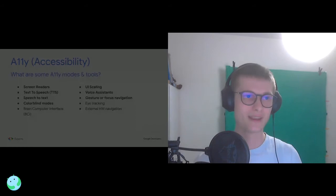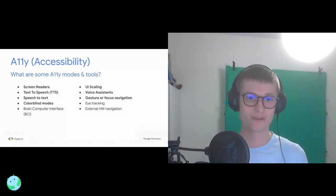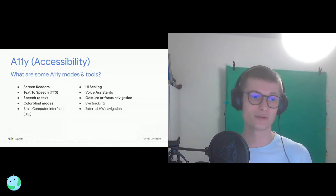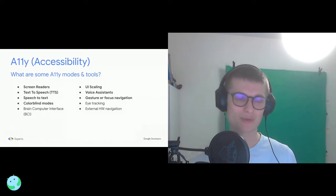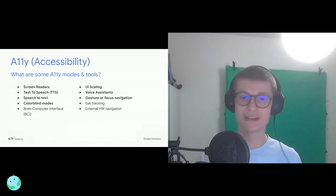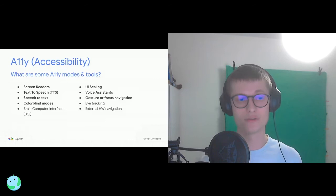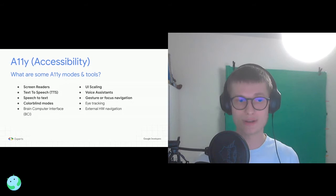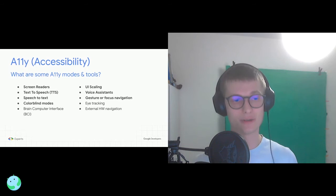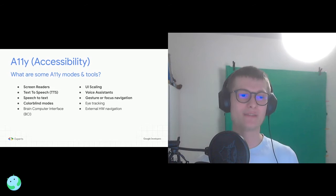Some of the modes and tools common software supports are screen readers, text-to-speech, speech-to-text, and colorblind modes. Screen readers help users read the screen by going through different elements in the hierarchy and reading those elements or their descriptions, so a user with full visual impairment can still experience your app through audio feedback, voice navigation, or external hardware tools.